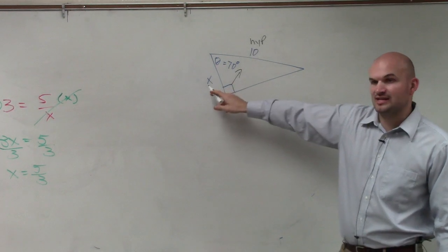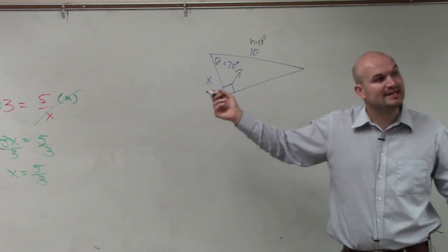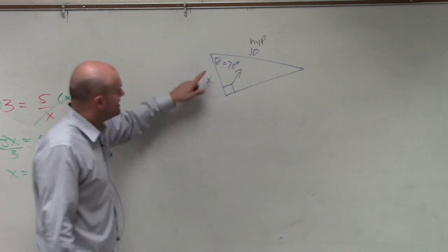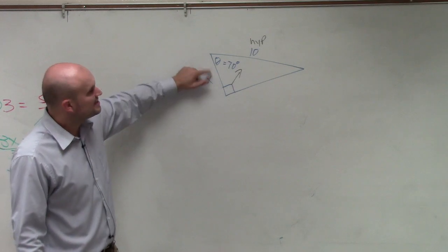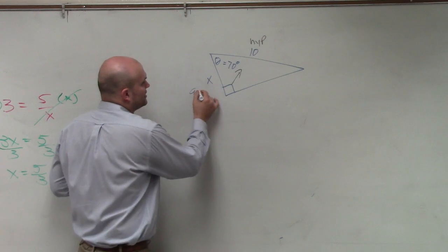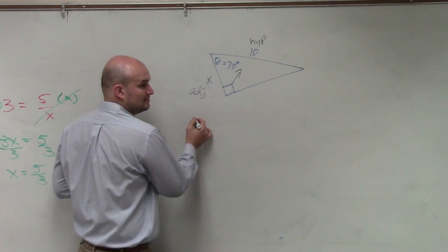Then we want to identify which length is this—it's either the opposite or the adjacent. The way that I always tell if it's the opposite or the adjacent is I look at where my angle is. The side length that connects my angle and my 90 degree is my adjacent side.